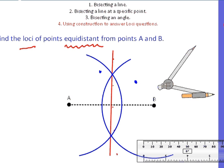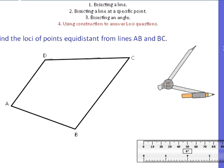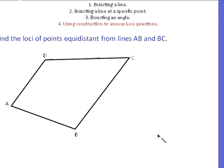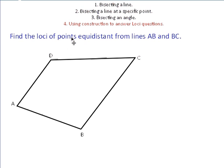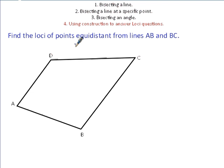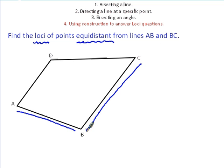You might also be asked: find the loci of points equidistant from line AB and line BC. Thinking back to the questions we've done, you should think — I need to bisect this angle. Grab the compass, put it in between the two lines, draw the first arc. Don't change the distance between the needle and pen; move it over and draw an arc, then move the needle to the other intersection and draw another arc.